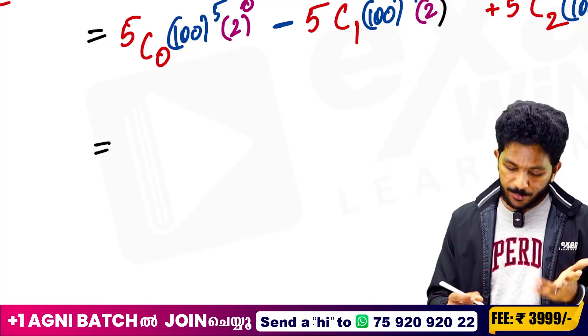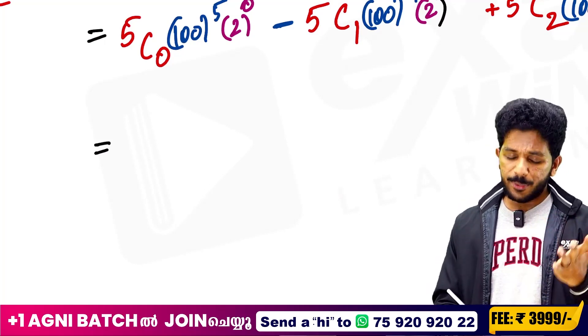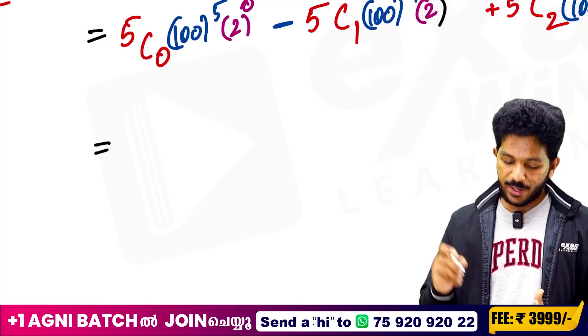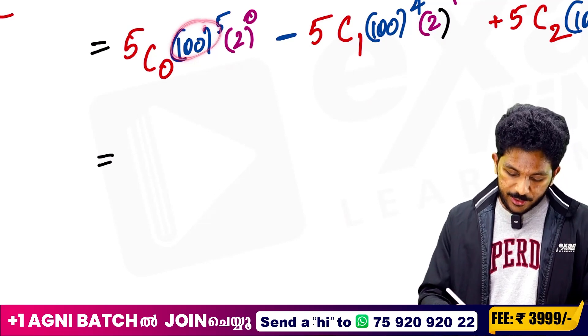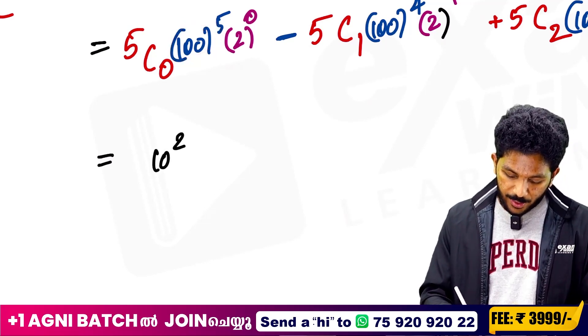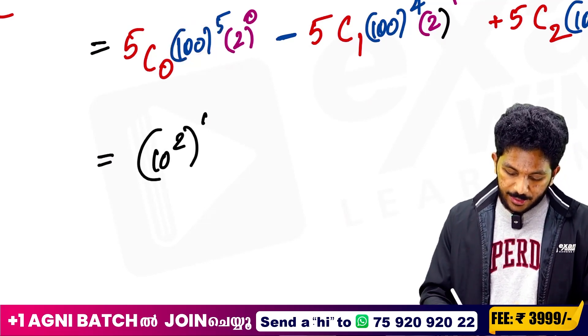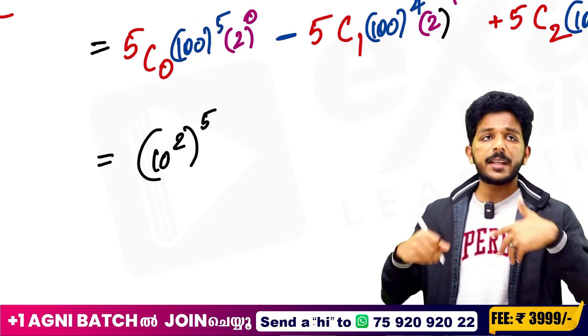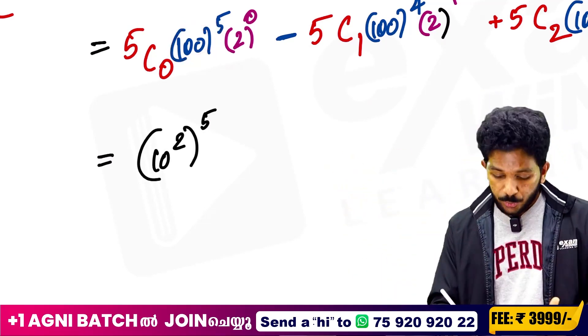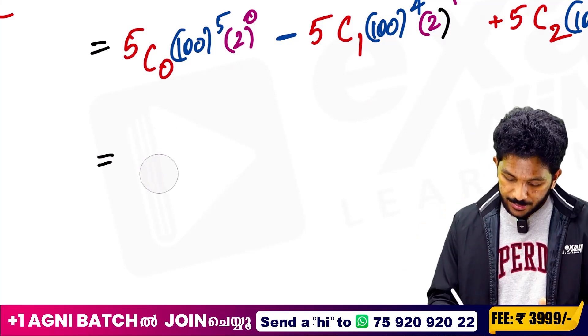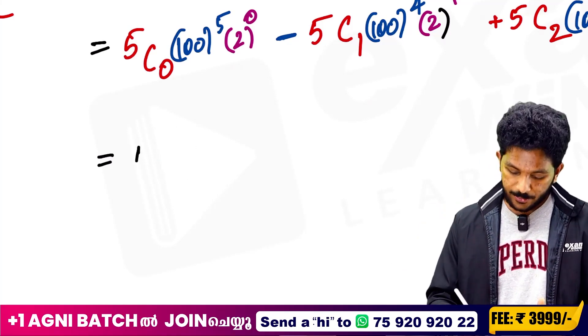Our question is very simple. 5C0 is 1 — any number C0 is 1. Then 100 raised to 5. If we have 100 raised to 5, then 10 squared is 100, that raised to 5. So 10 squared raised to 5, then 2 into 5, giving 10 raised to 10.